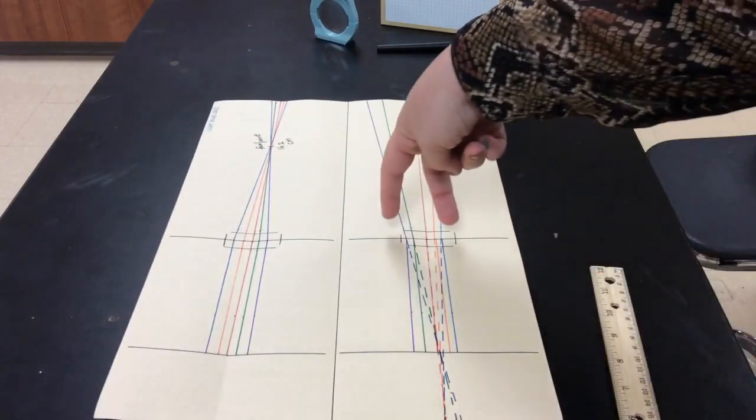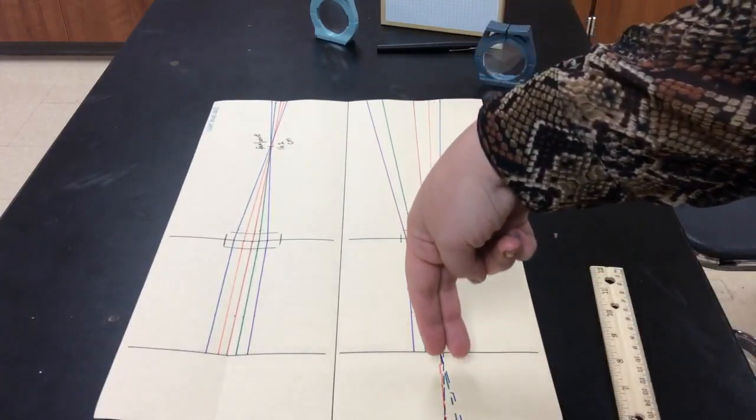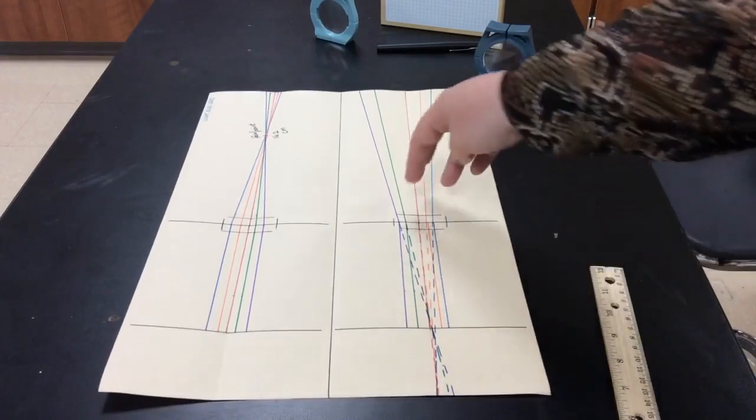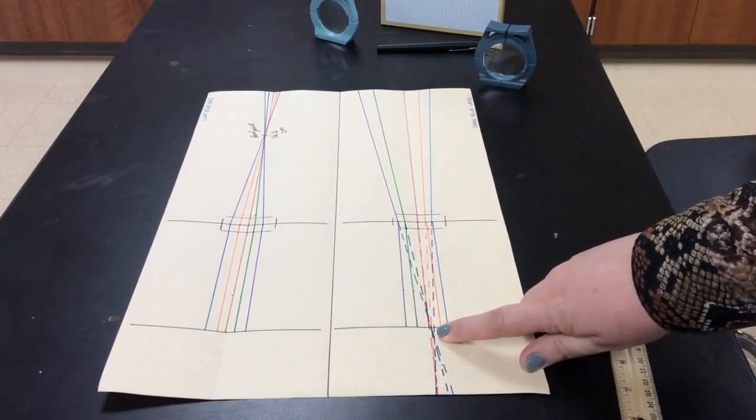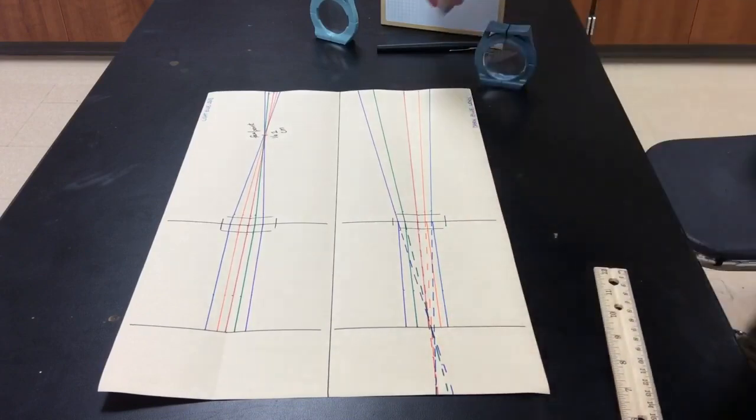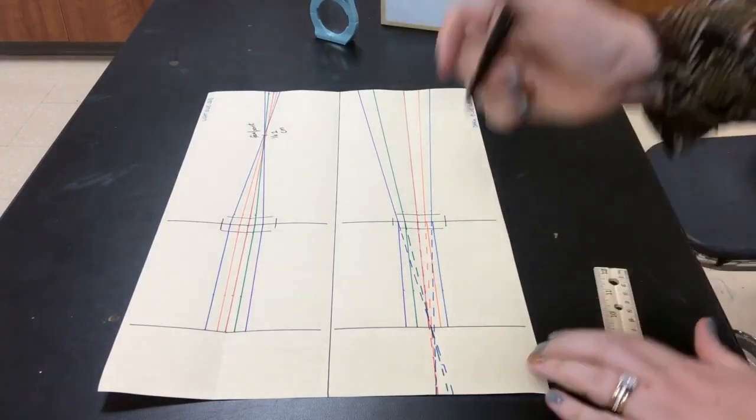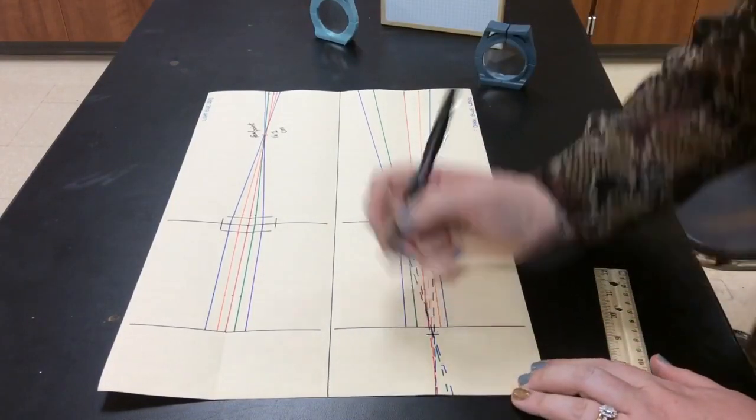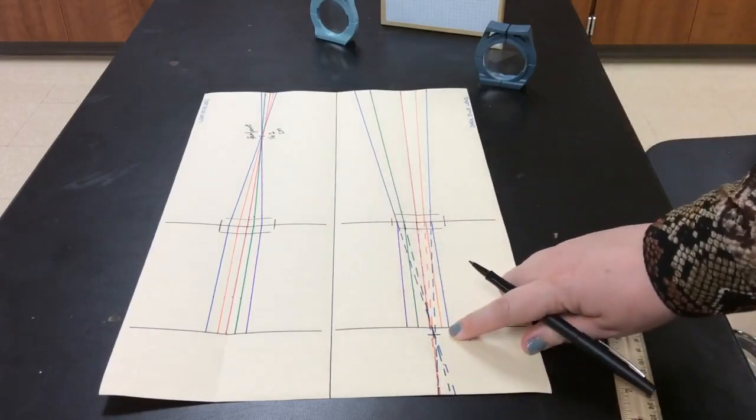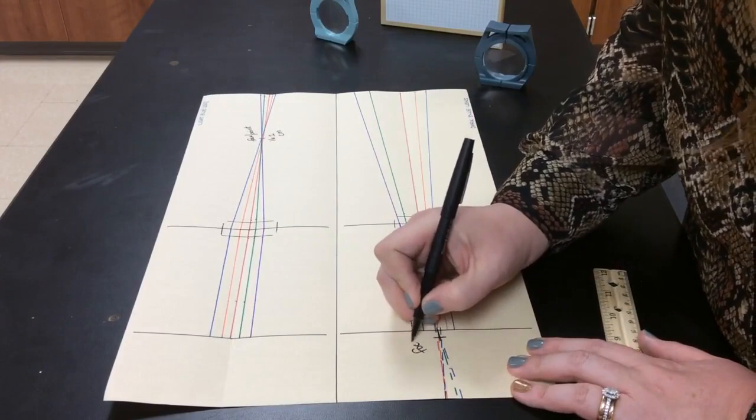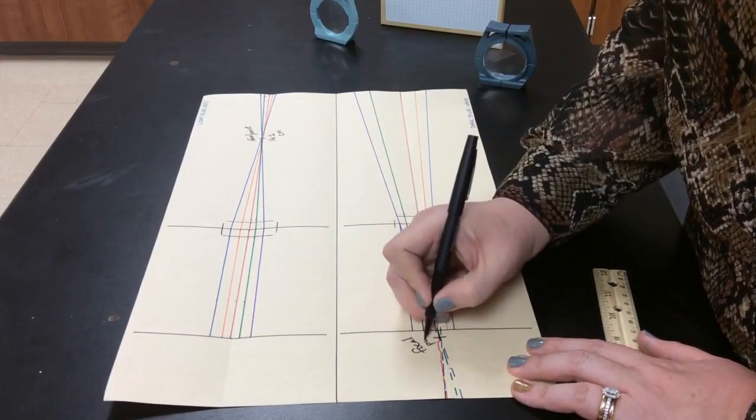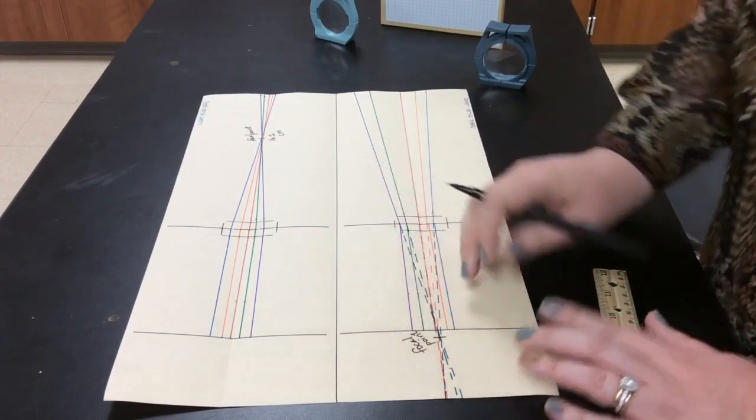So you can see that all of our rays again converge behind the lens. Now they're coming together and we've got again a pretty clear spot right about right here that I'm going to mark where generally speaking they all come together.